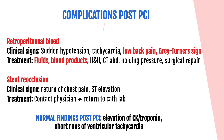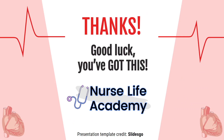Treatment for retroperitoneal bleeding includes fluids and blood products due to volume loss, check H&H, CT abdomen, hold pressure, or go to surgery if necessary. Regarding other post-PCI complications: stent reocclusion presents with return of chest pain and ST elevation — contact the physician for potential return to the cath lab. Elevation of CK or troponin levels and short runs of VTAC post-PCI may seem abnormal but are actually normal findings, due to stunning of the myocardial muscle when the vessel reopens.